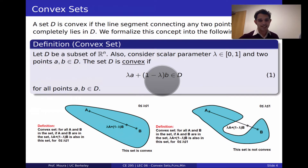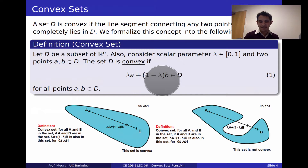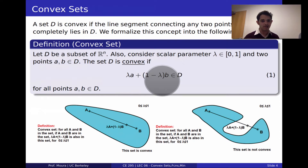A set is convex if for every single pair of points in D, the line segment connecting A and B — parameterized by lambda — lies entirely in D. Note that when lambda is 0, that corresponds to point B; when lambda is 1, that corresponds to point A. This definition requires checking an infinite number of pairs, so it's not a practical test — just a definition of what a convex set is.